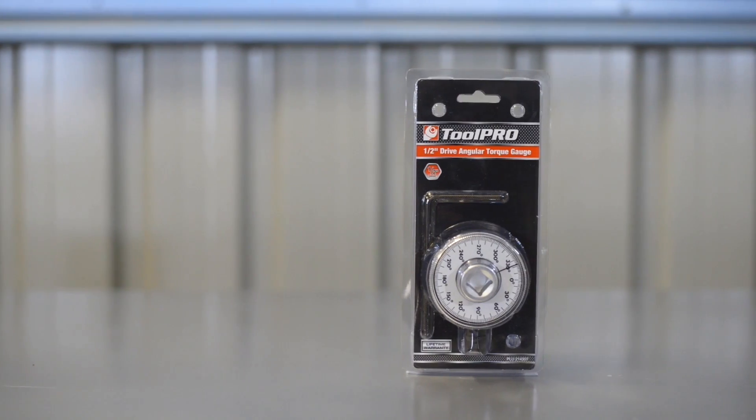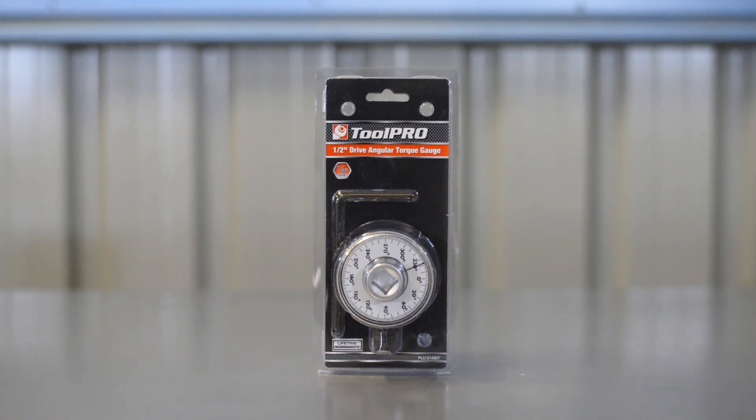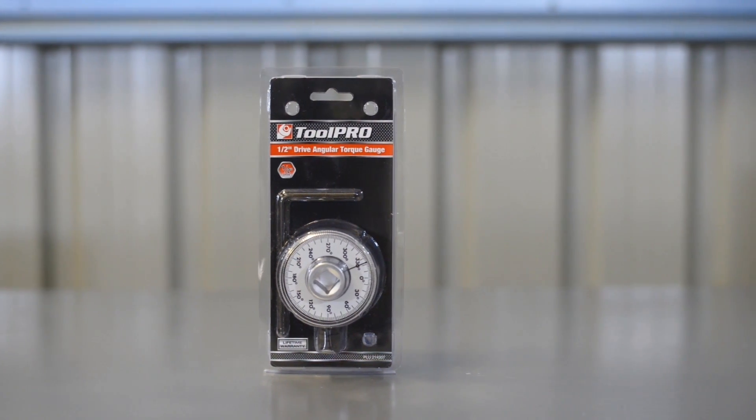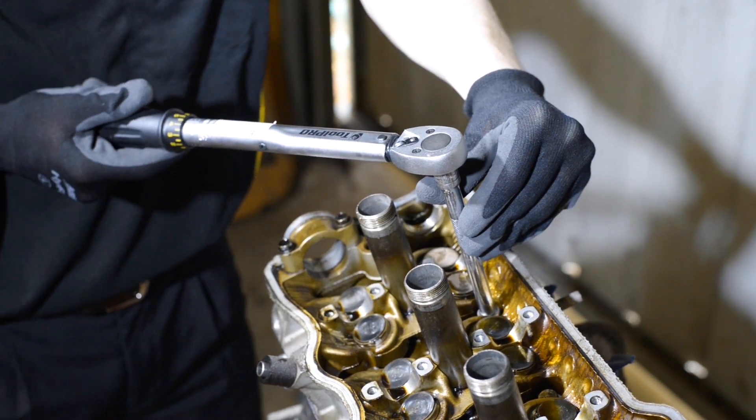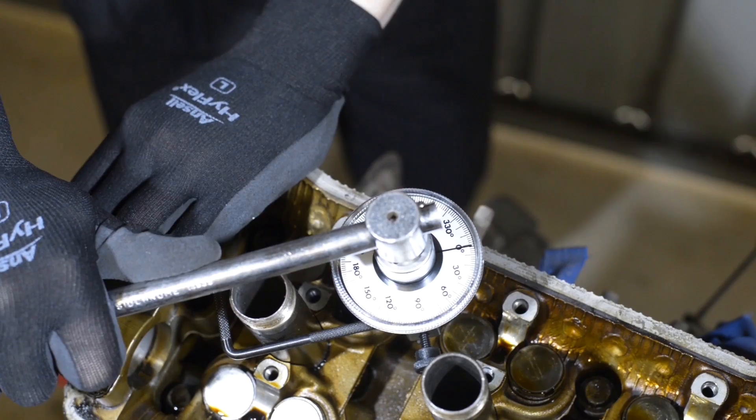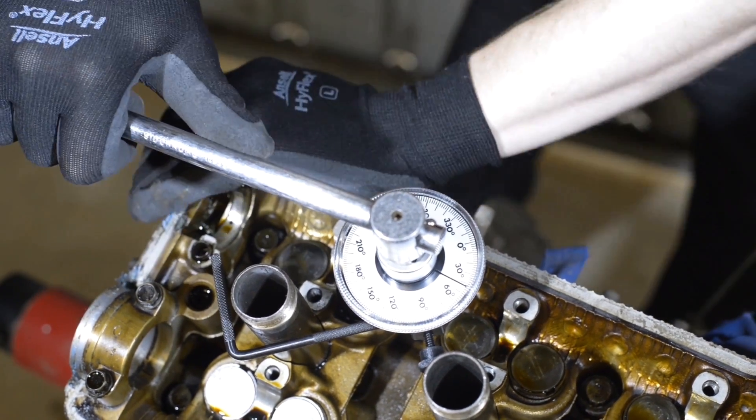The ToolPro half-inch drive angular torque gauge is a specialist tool often required in engine rebuilding. In this case, these head bolts require first to be tightened with a torque wrench, then with the angular torque gauge to obtain a further 90 degrees of rotation.